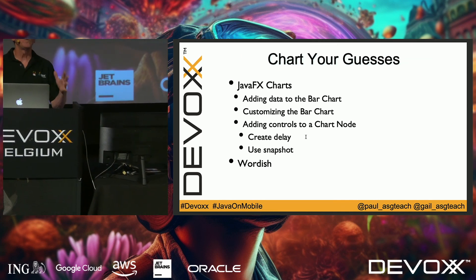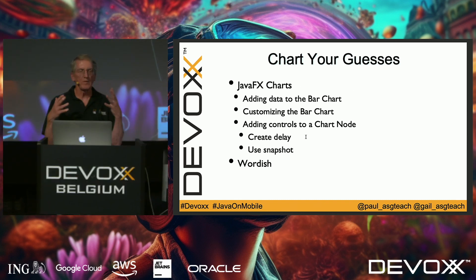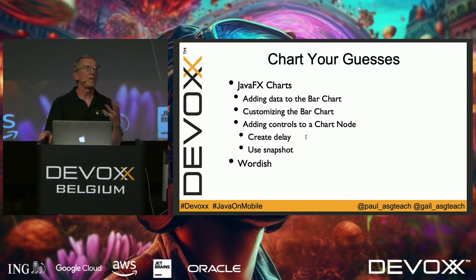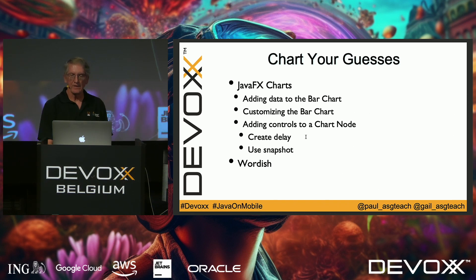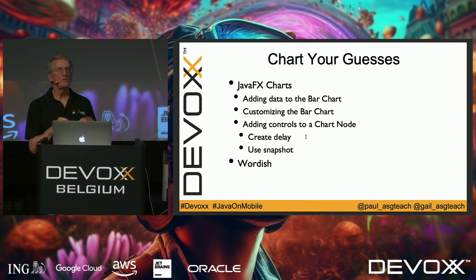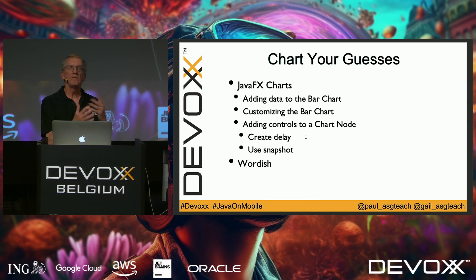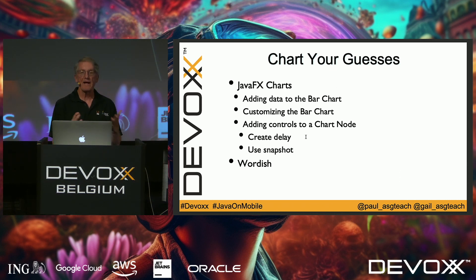The last JavaFX feature we want to cover is charts. JavaFX has pie charts, bar charts, line charts, and more. Since Wordle tracks statistics with a bar chart for visualizing guess distribution, we added that to Wordish. We use a horizontal bar chart in a separate statistics view with its own FXML file. Game statistics — games played, win percentage, current streak, and maximum streak — are collected in a singleton object, and the guess distribution is shown as a horizontal bar chart below the stats.